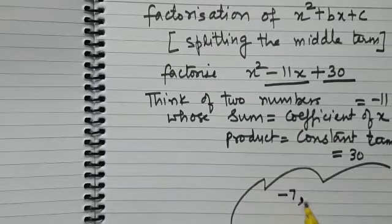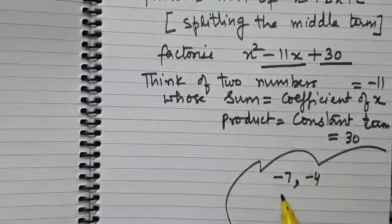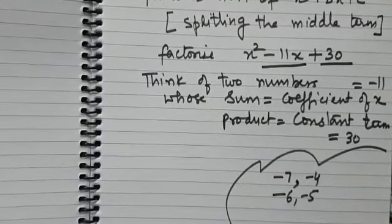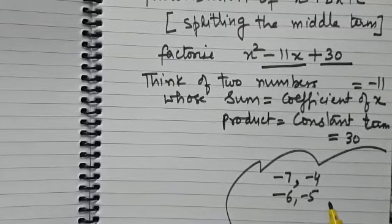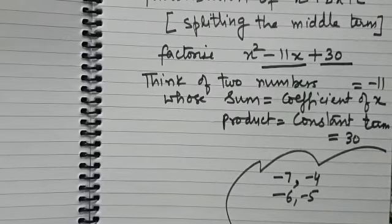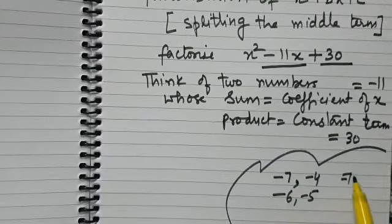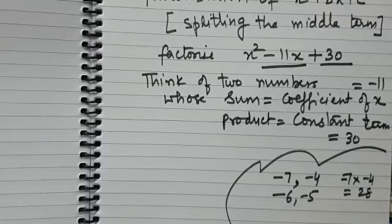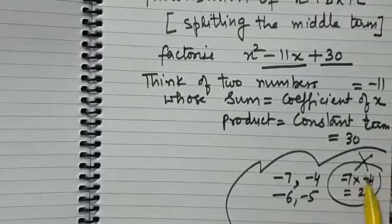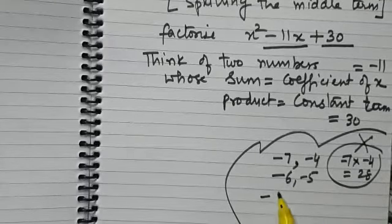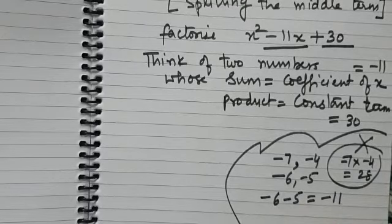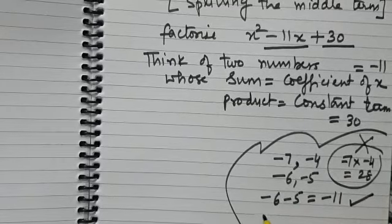You might be thinking of pairs like minus 7 and minus 4, or minus 6 and minus 5. But you need to find the pair in which both conditions are satisfied — the sum should be minus 11 and the product should be 30. When you find the product of minus 7 and minus 4, you get 28, so we eliminate that pair. For minus 6 and minus 5: minus 6 + minus 5 = minus 11, and minus 6 × minus 5 = 30 — both conditions satisfied.